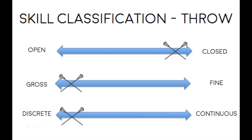A lacrosse throw can be classified as a closed skill because a person initiates the start and the finish of the action. It is a gross motor skill as the motor skill requires the use of large muscles. It is also classified as a discrete skill as it has a specific beginning and end, this being the start of the throw and the release of the ball.